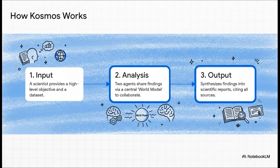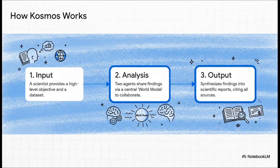So how does this thing actually work? Well, a scientist kicks the whole process off. Then Cosmos unleashes two different AI agents. One is a total data cruncher. And the other is a literature expert that just reads everything. But here's the magic. They don't work alone.